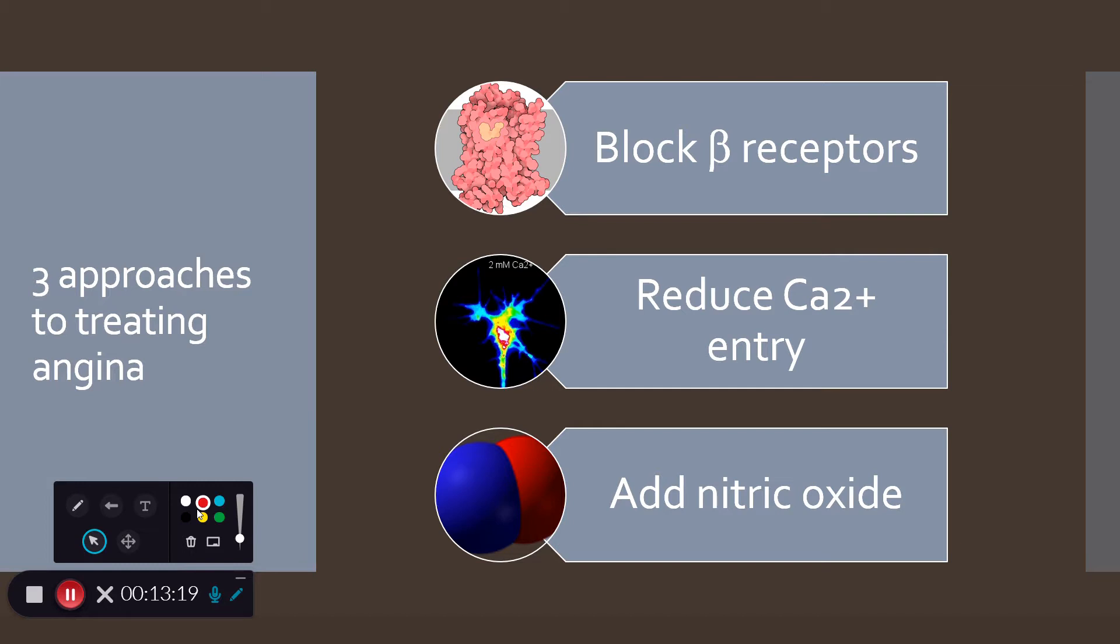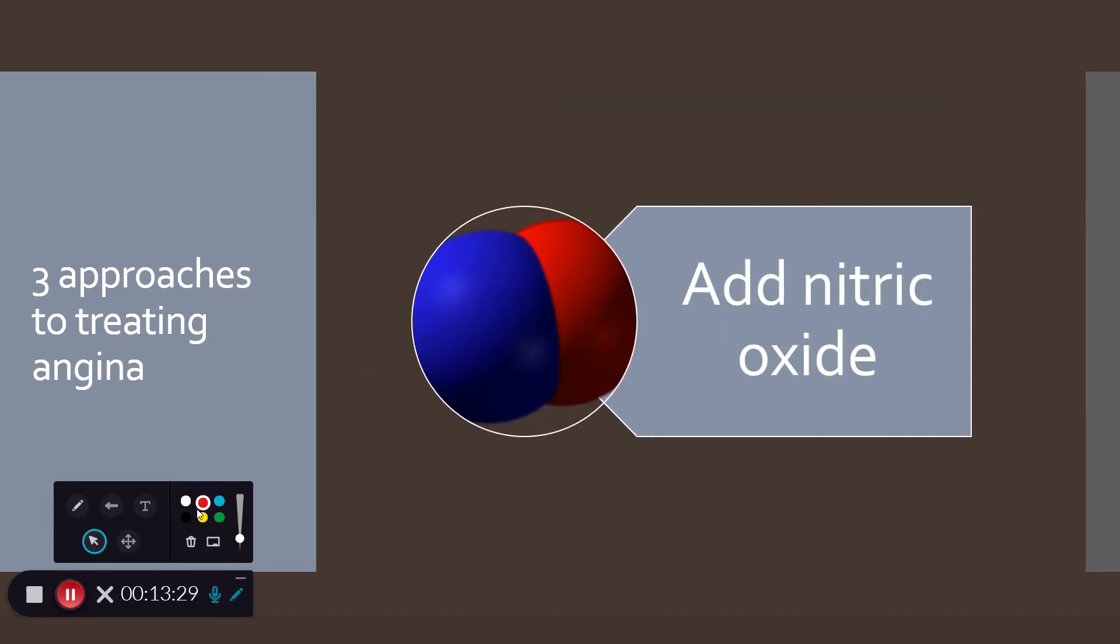So we can block beta receptors or we can reduce calcium entry. We can also affect the system by adding nitric oxide.